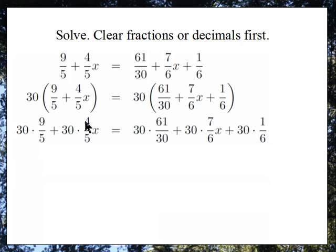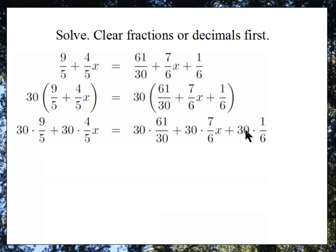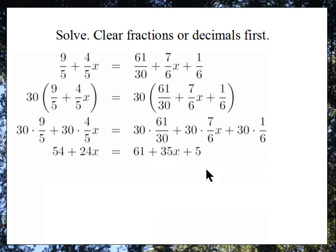This one works the same way: I've got 4 divided by 5, but I can divide the 30 by 5 — 30 divided by 5 is 6 — and 6 times 4 is 24, so I have 24x here. Then 30 divided by 30 is 1, so the 30s cancel and I just have 61. Next, 30 divided by 6 is 5, so I have 5 times 7, which is 35x. And then 30 divided by 6 is 5, so I end up with this simpler equation without any fractions.